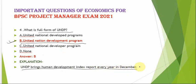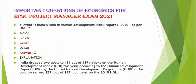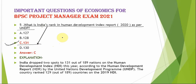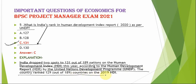The next question is: what is India's rank in the Human Development Index report 2020 as per the UNDP report? The correct option is option C — India's rank is 131. India's rank dropped to 131 out of 189 nations on the Human Development Index according to the Human Development Report by the United Nations Development Programme. The country had ranked 129 out of 189 countries in the 2019 Human Development Report.